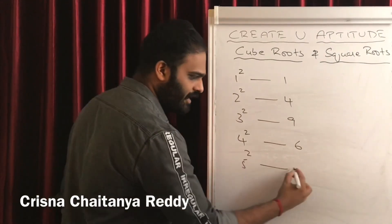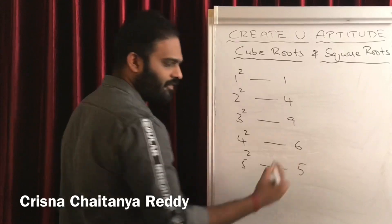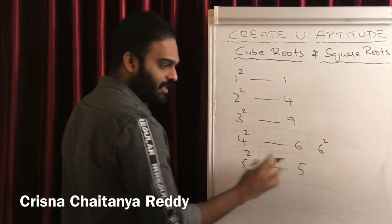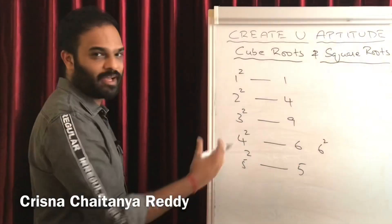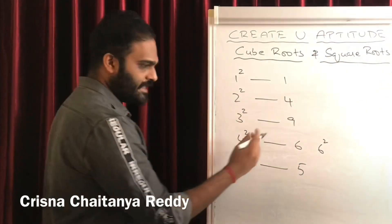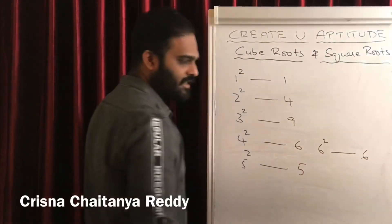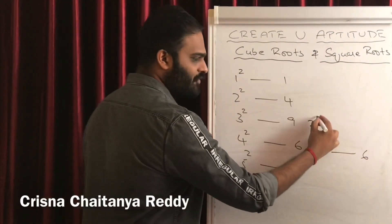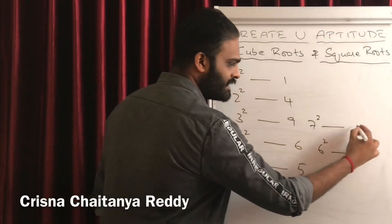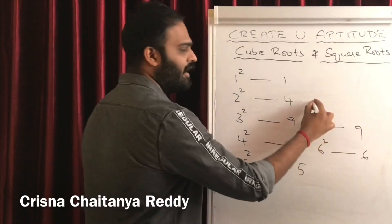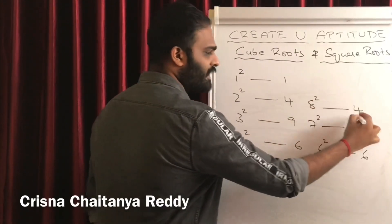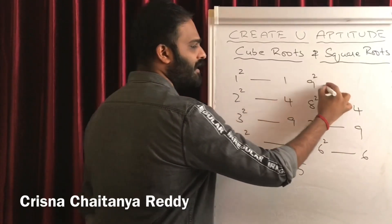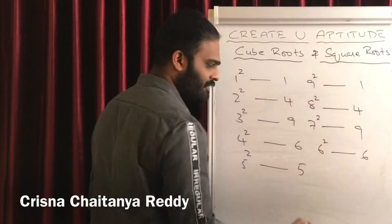5 square is 25, so I'll write 5. 6 square is ending with 6 — that's 36. 7 square is 49, so it is ending with 9. 8 square is 64, so it is ending with 4. And 9 square is 81, so it is ending with 1.